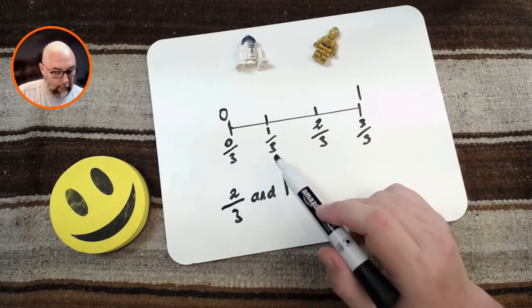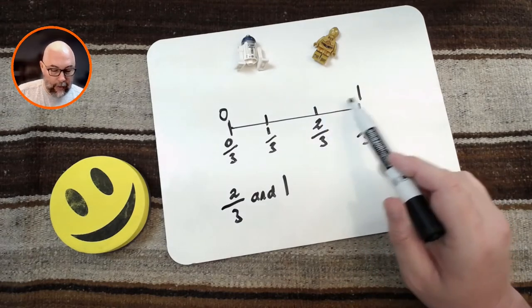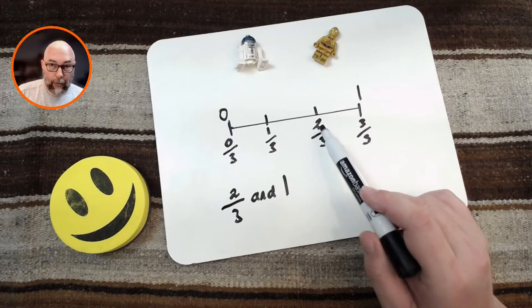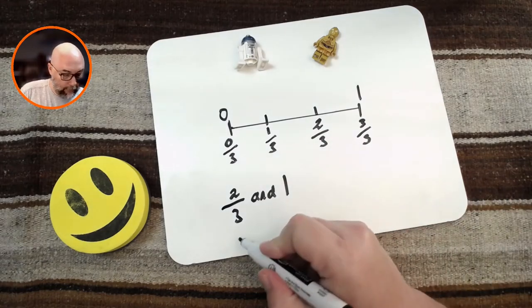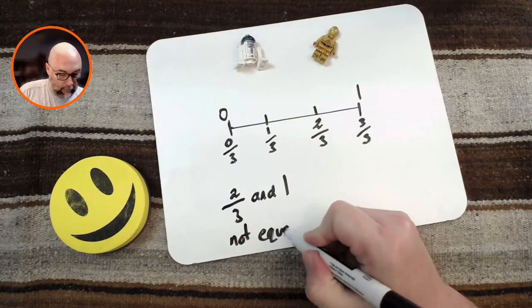Let's find out. Let me go from here, 0 thirds, 1 third, 2 thirds. And that is not the same as 1. That is 2 thirds. So we say that these are not equal.